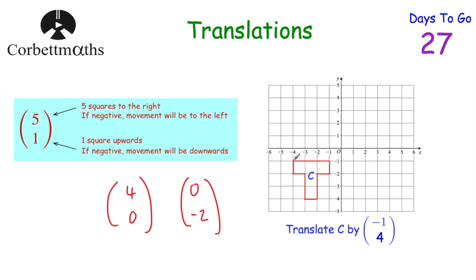What I like to do is work one point at a time. Starting with the first point, I move it one square left and four up. I do the same for each remaining corner of the shape, moving each one square to the left and four squares up. Once all the points are plotted, we join them up with a ruler and pencil. So we've translated C by the vector (-1, 4) — moved it one square to the left and four squares up. Always use a ruler and pencil when doing these questions.